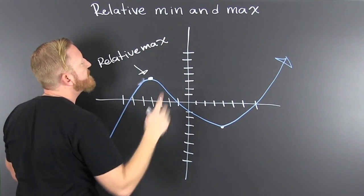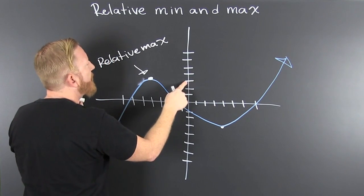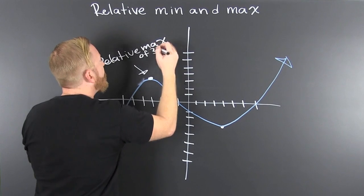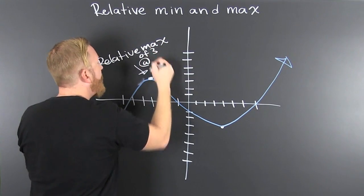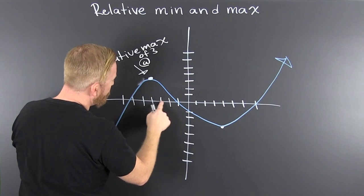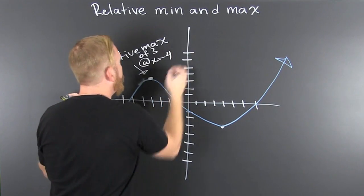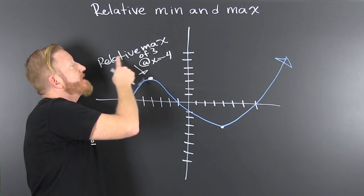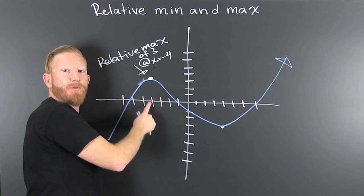The relative max - what's its value? The relative max of three. Where does it occur? At one, two, three, four - x is equal to minus four. It is a point, it's the point minus four comma three. It's a relative max of three and it occurs when x is equal to minus four.